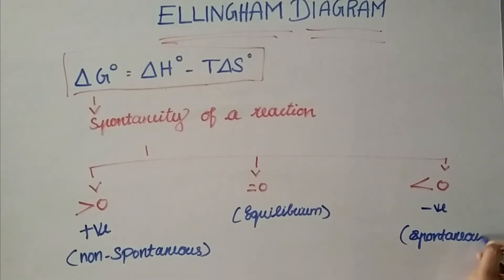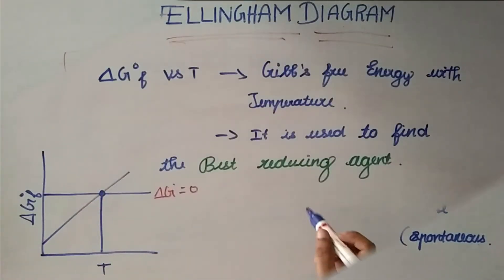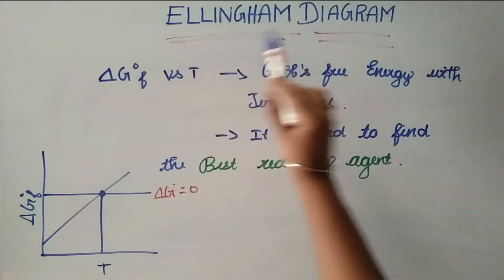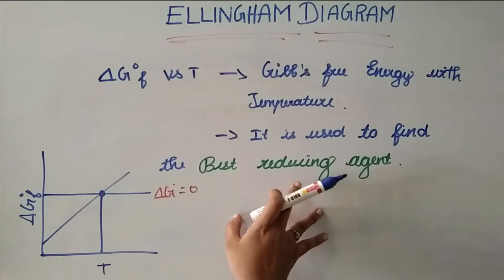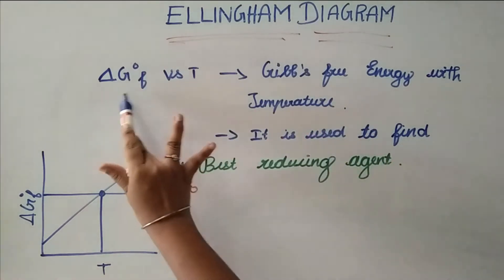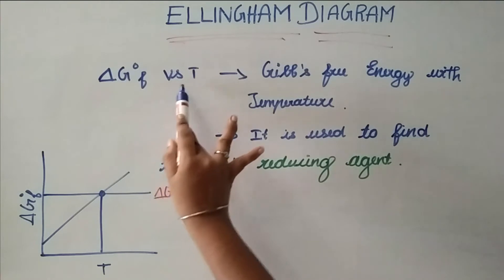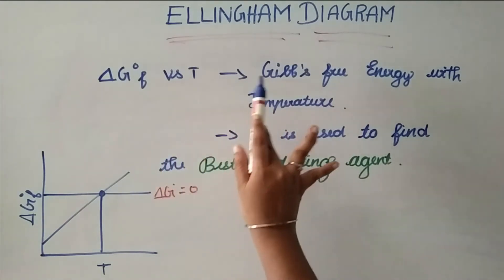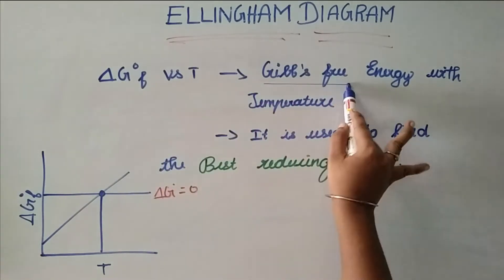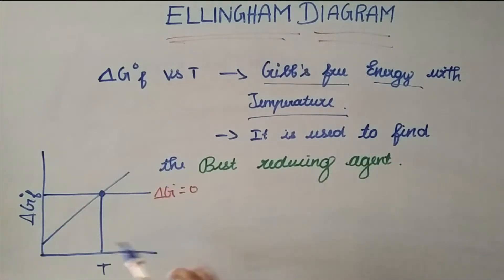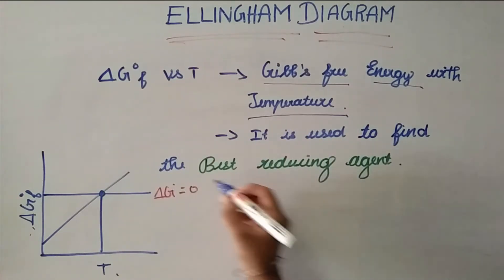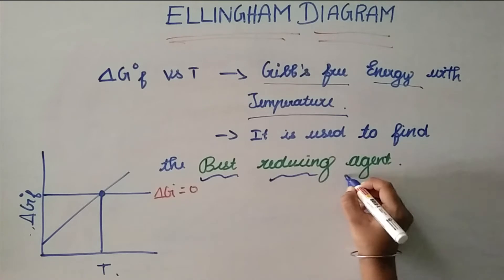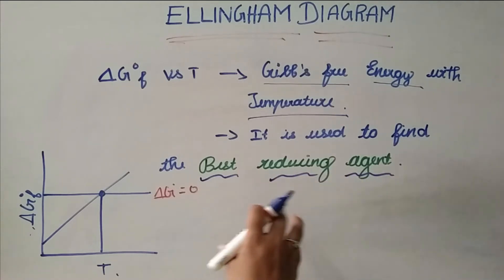This is the Ellingham diagram — a graphical representation used to find the best reducing agent. In this diagram, we plot δG⁰ versus temperature T. The graph has a positive part and a negative part.